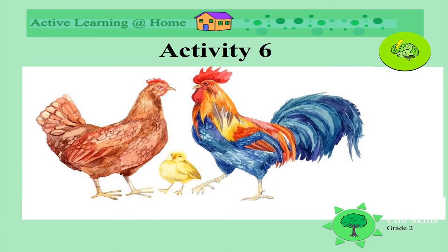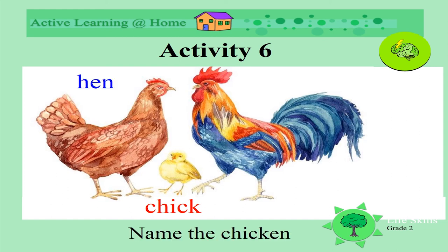Let's check if you can remember. What is the chick? A baby chicken. What do we call the hen? Well done! And what do we call the daddy? A rooster or a cock. So a chick is a baby, a mommy is a hen, and a daddy is a rooster or a cock. Well done, well remembered!